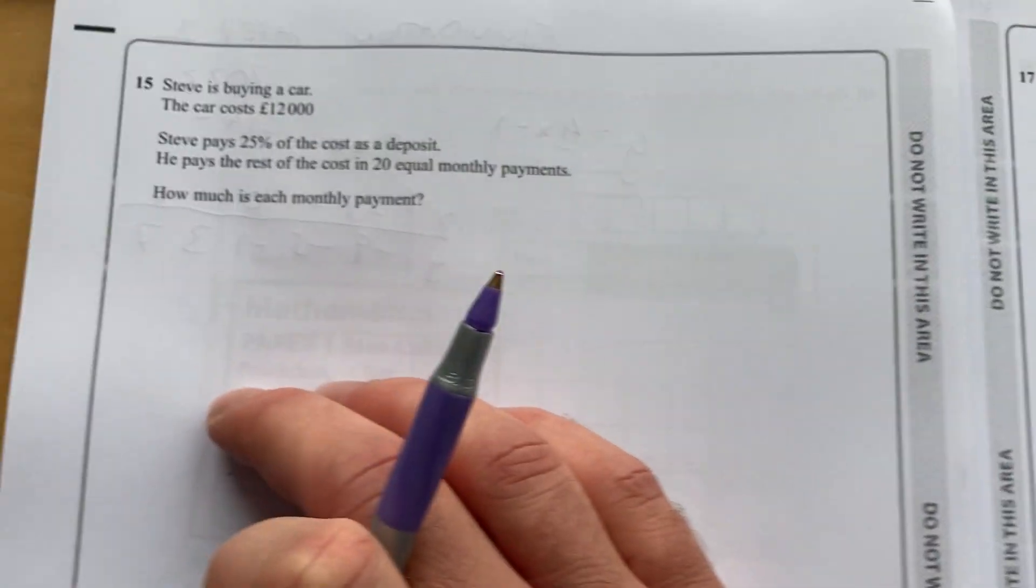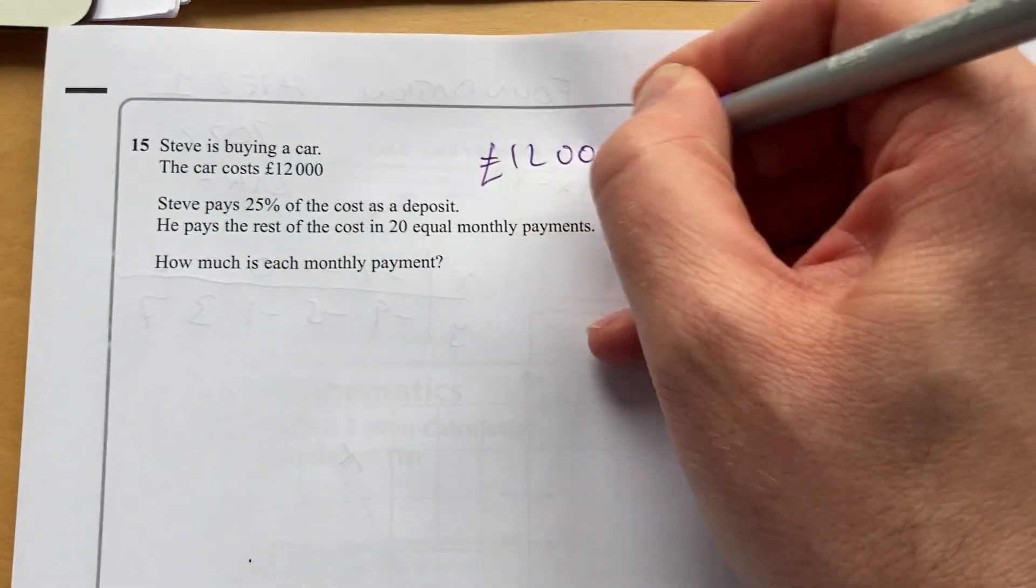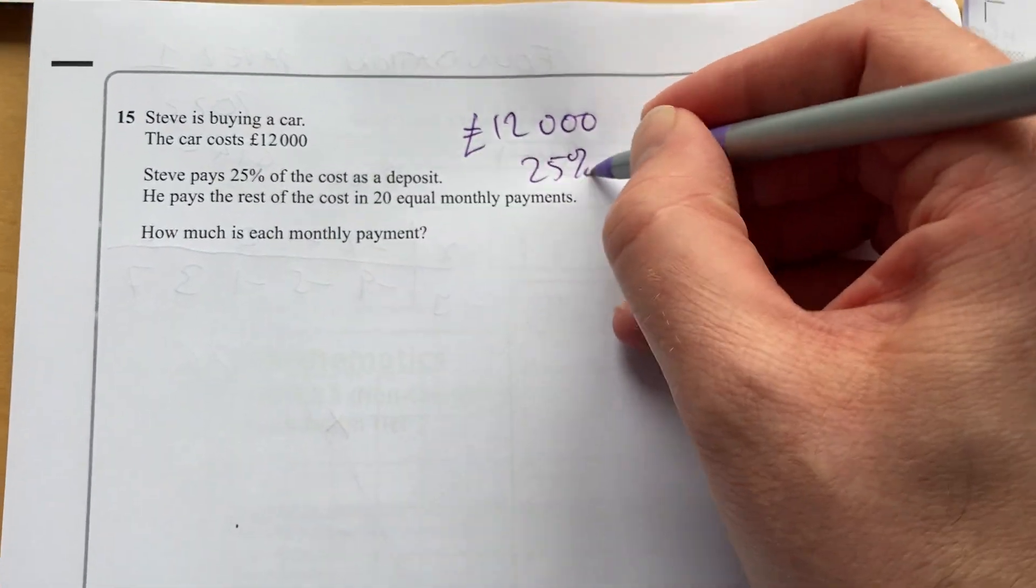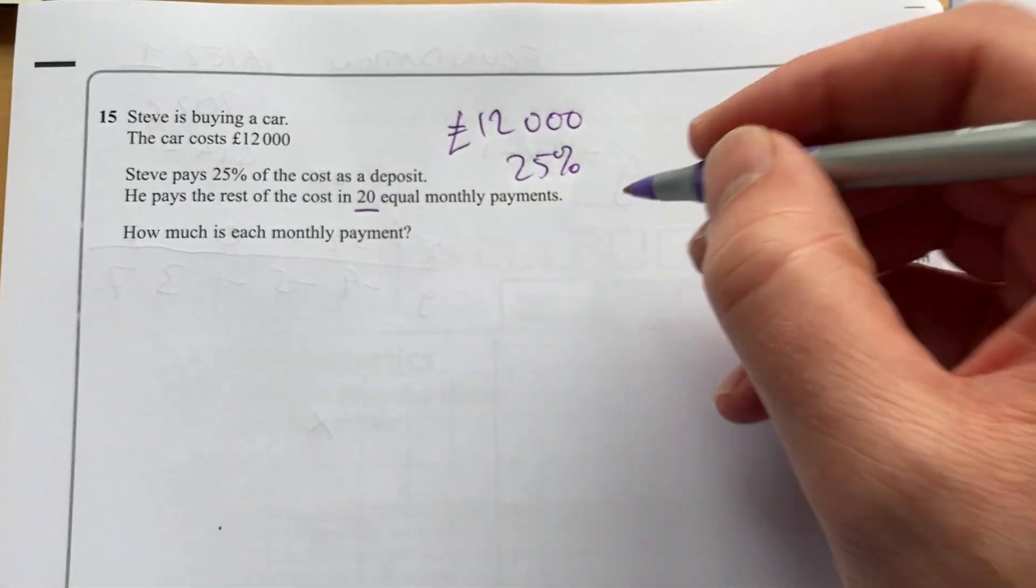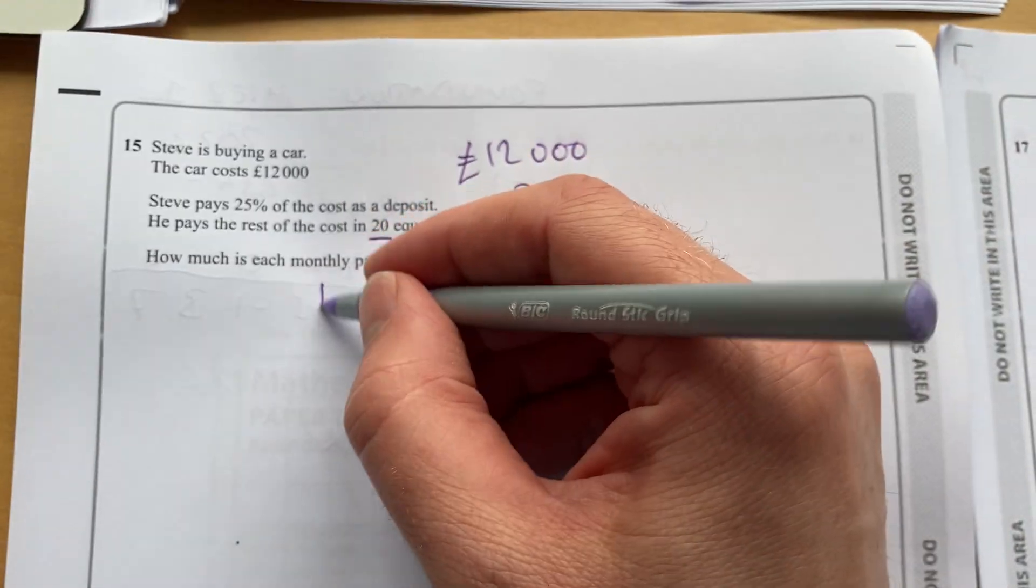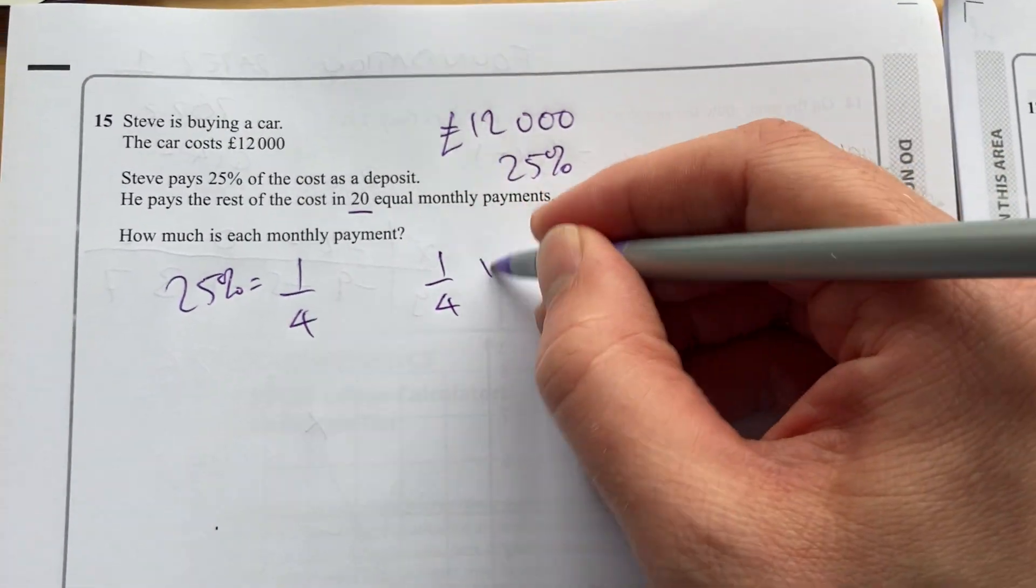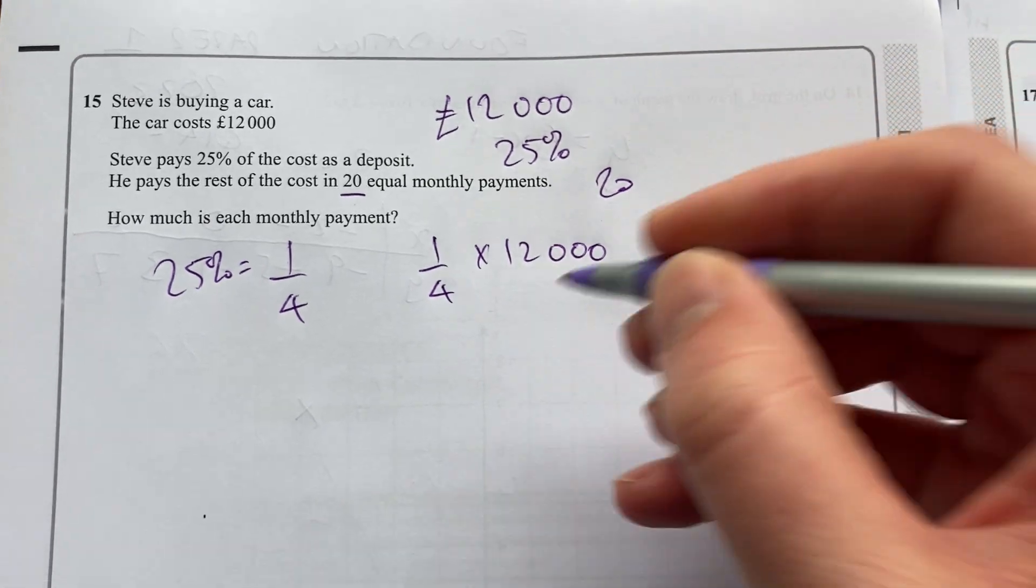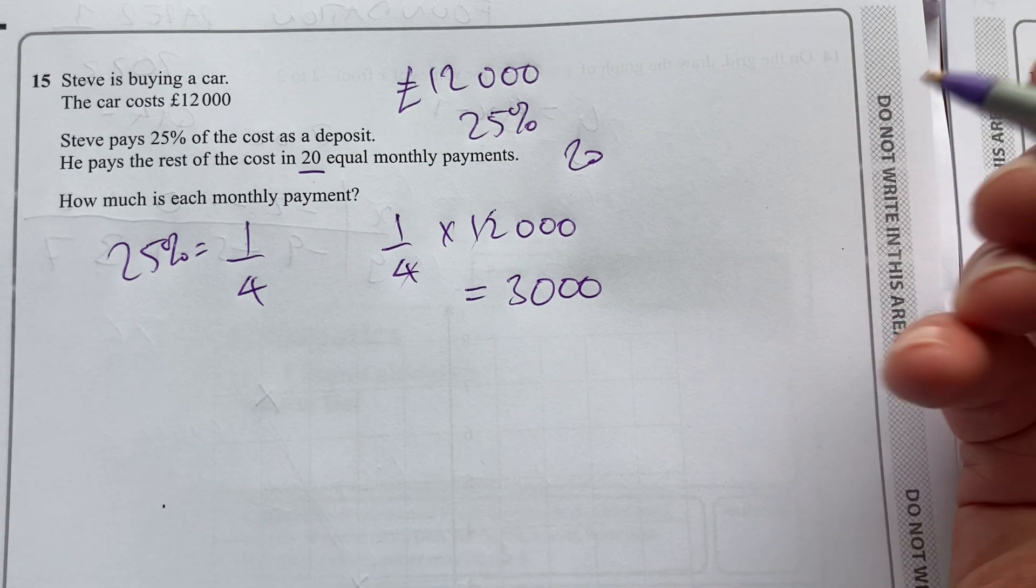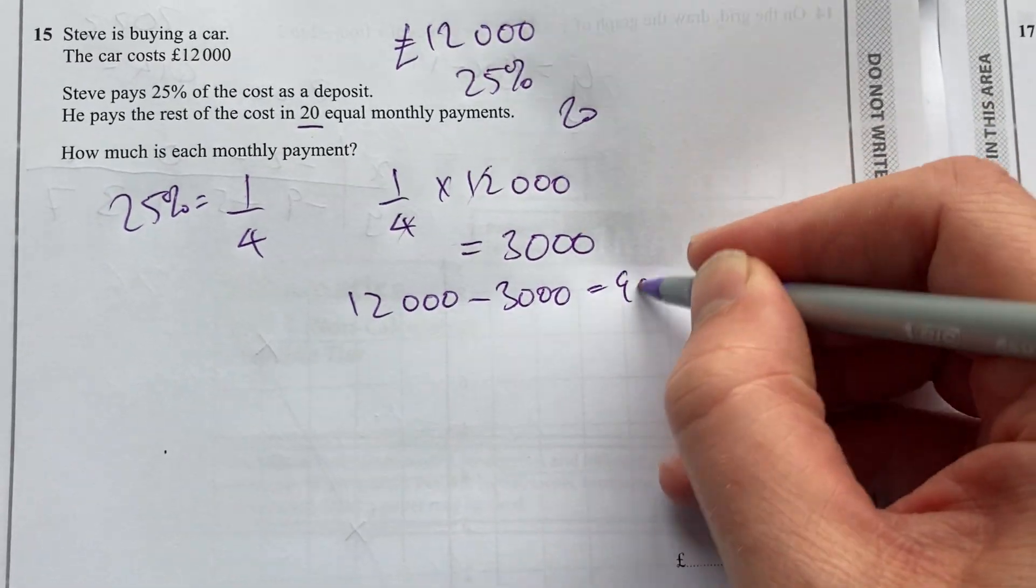Question 15 here. Steve is buying a car. The car costs £12,000. Steve pays 25% as a deposit, and then the rest in 20 equal installments. So the first thing I'm going to do is find out what 25% is. So 25% is the same as a quarter. So I'll take a quarter times 12,000. That'll be 3,000. So then what's left is 9,000.